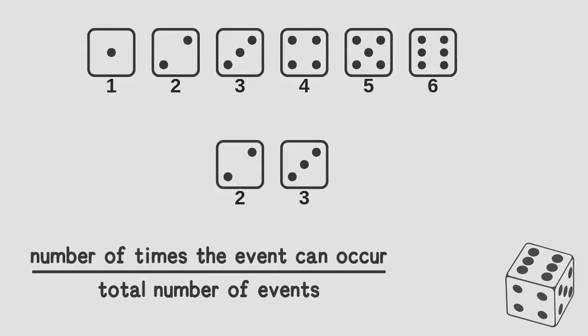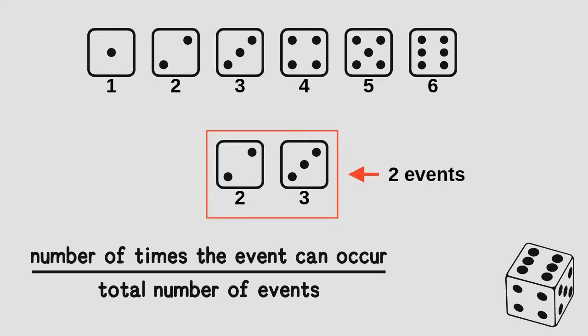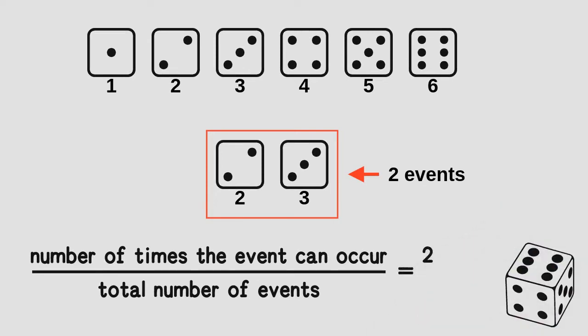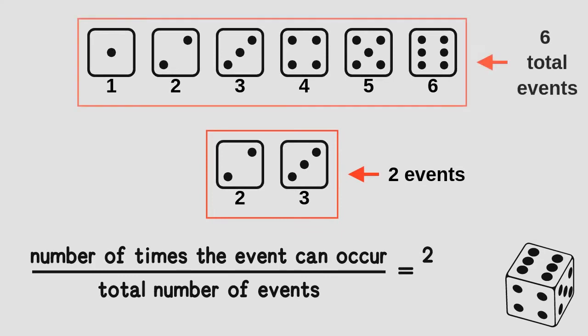Now imagine we would like to know the probability of rolling a two or a three when a die is thrown. If we roll a two the event occurs, but the event also occurs if we roll a three — that means we have twice the chance. Using the same procedure: the number of times the event can occur equals two, because there are two equally valid outcomes. Total number of events equals six. That gives us two divided by six — a two in six chance.